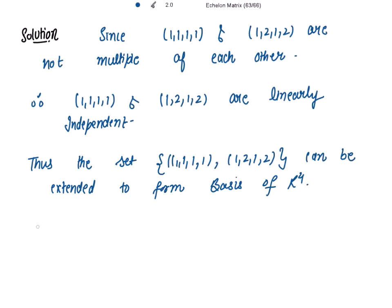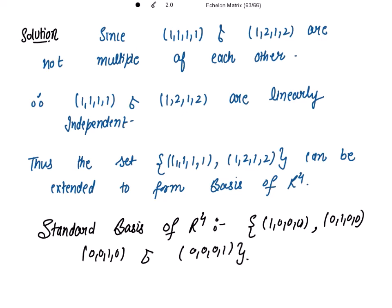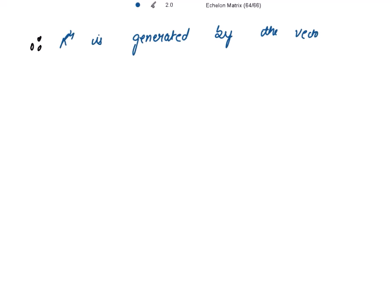Since these two vectors are not multiples of each other, therefore these are linearly independent. Thus, this set can be extended to form the basis of 4-dimensional vector space. What are the standard bases of 4-dimensional vector space? That is 1-0-0-0, 0-1-0-0, 0-0-1-0 and 0-0-0-1. So these standard bases plus these two vectors — total 6 vectors — are now the generating set of R4. That is 1-1-1-1, 1-2-1-2 and then the standard bases.